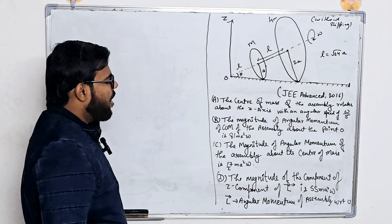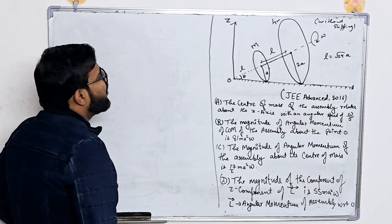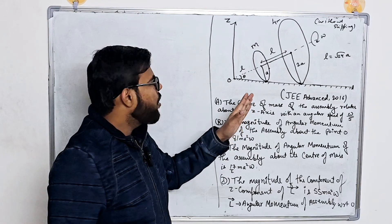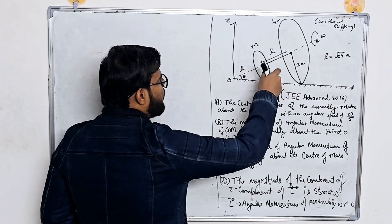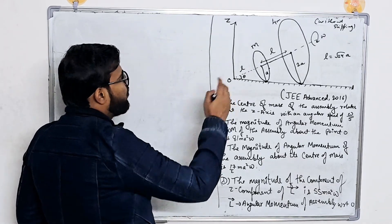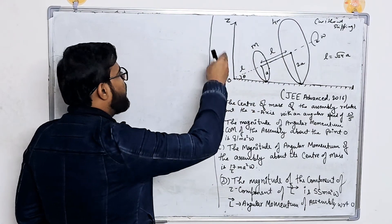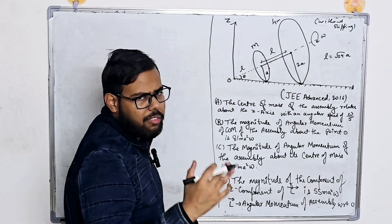Let's see what the question states. We have a body or assembly comprised of two disks that are connected, and the disk is rotating with angular speed omega. Due to the rotation, since it is without slipping, it is revolving around the Z axis. Here are some values L and A — they are the radii and distances which we will see later.